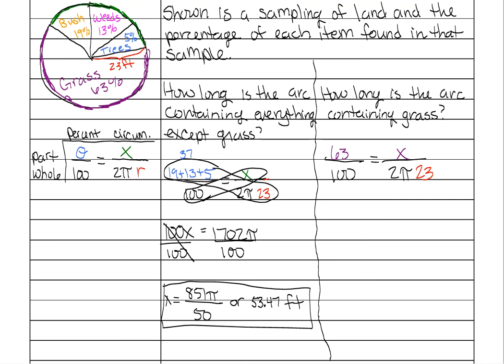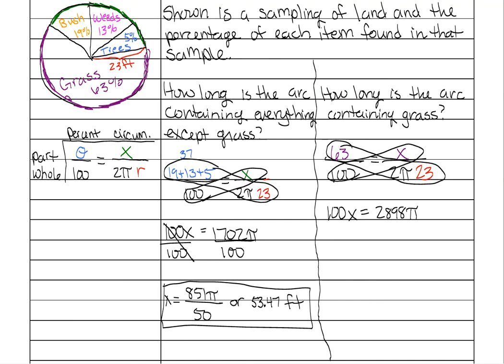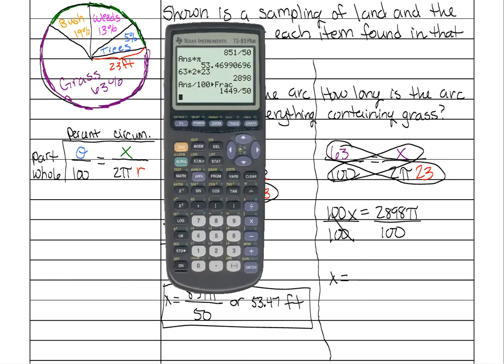Now we need to cross multiply. And that is 2898 whenever you multiply all those. And don't forget your pi. Divide both sides by 100. Left side cancels and reduce your right side for your answer.